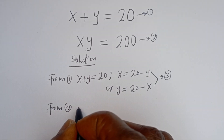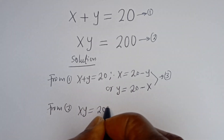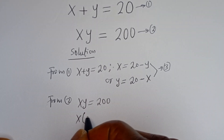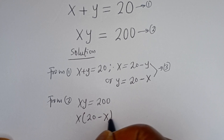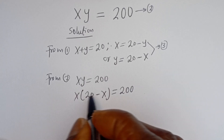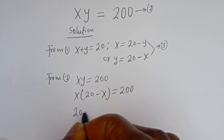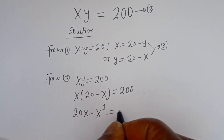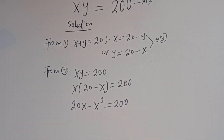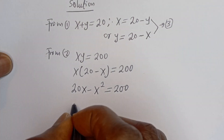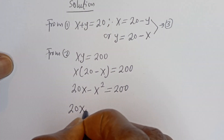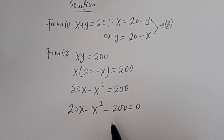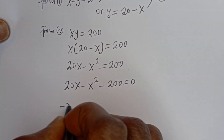We have XY is equal to 200, then X multiplied by bracket (20 minus X) is equal to 200. Let's open the bracket: X multiplied by 20 is 20X, minus X multiplied by X is X squared, is equal to 200.